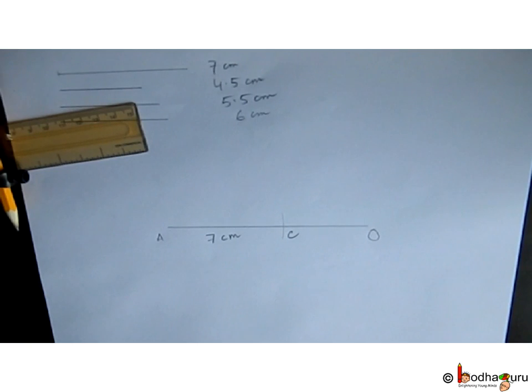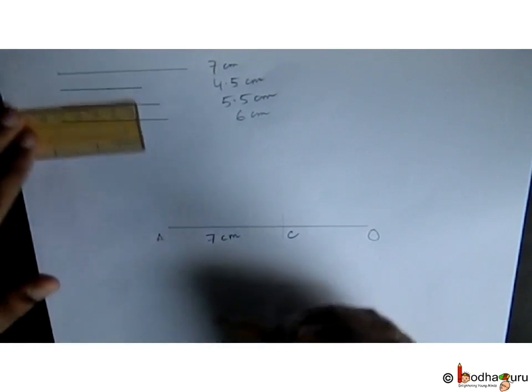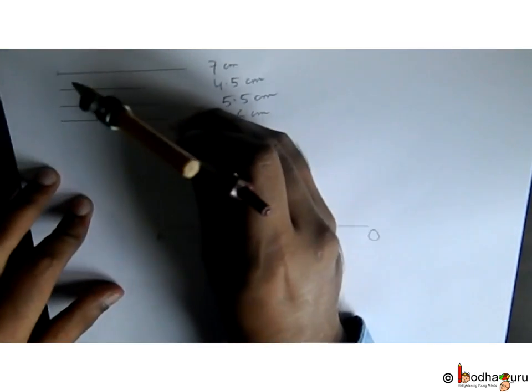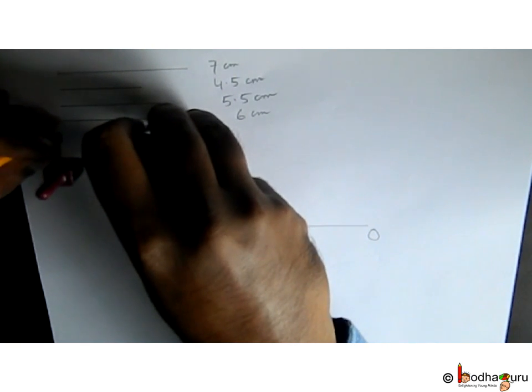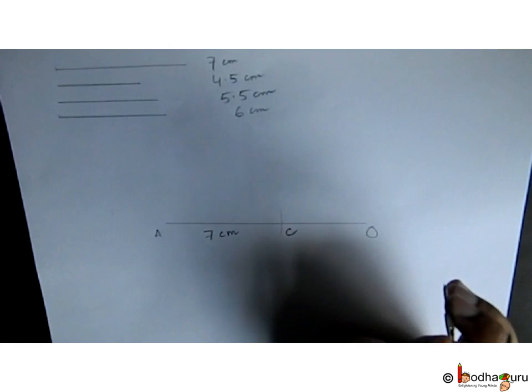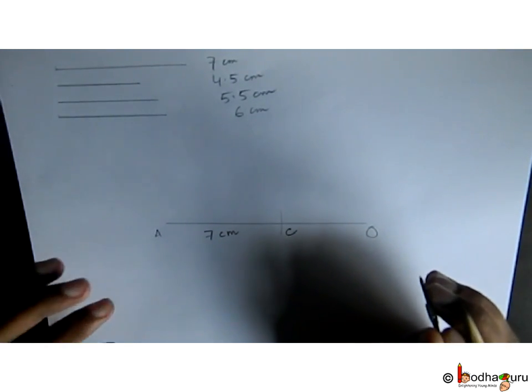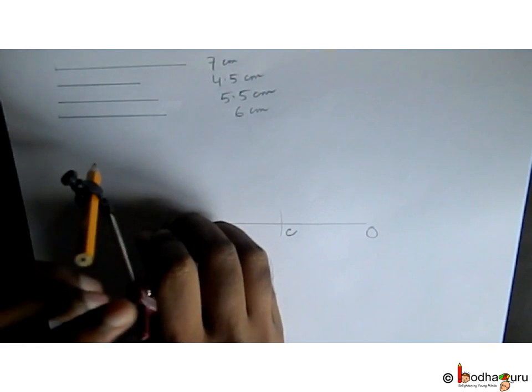Now we need to draw AD is equal to 6 centimeter and CD is equal to 4 centimeter. We take 6 centimeter radius in compass using 6 centimeter line segment as the reference, put needle at A and draw an arc on this side.